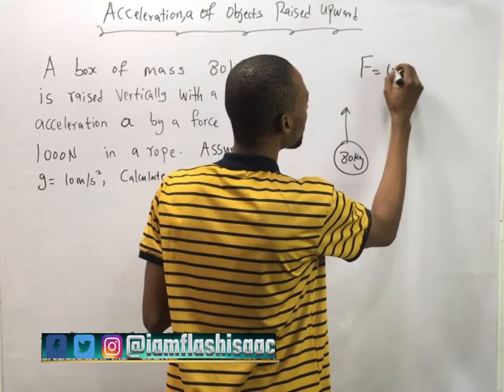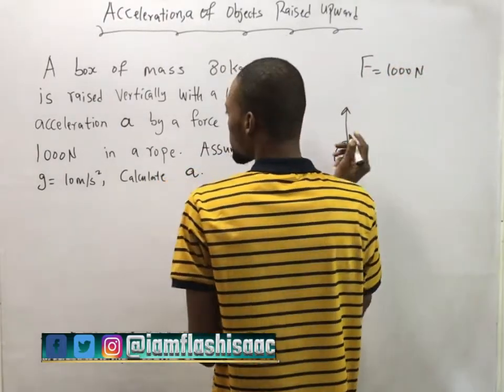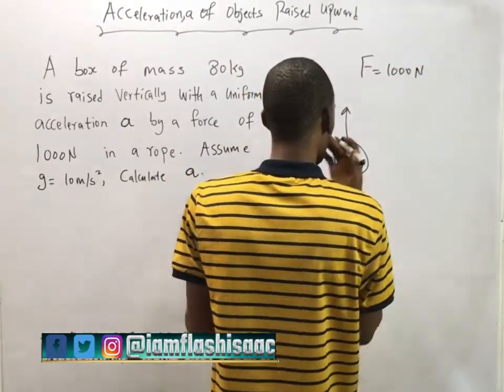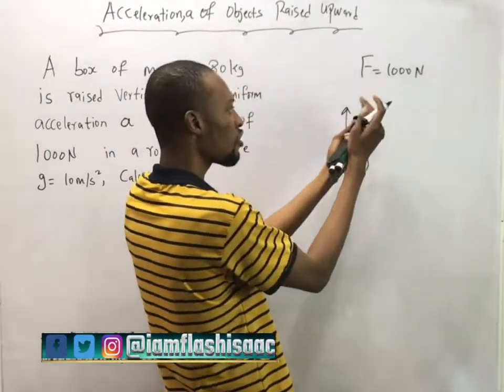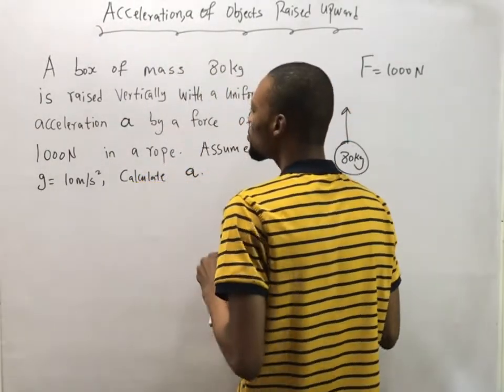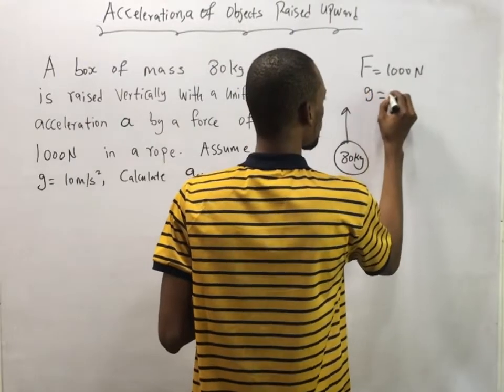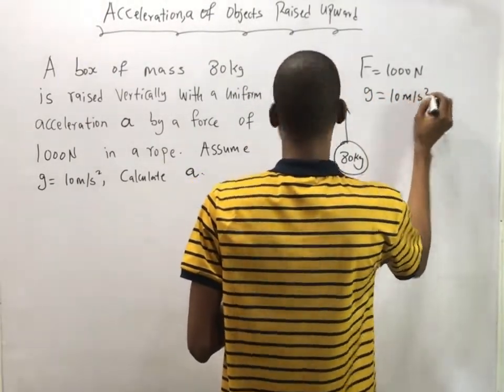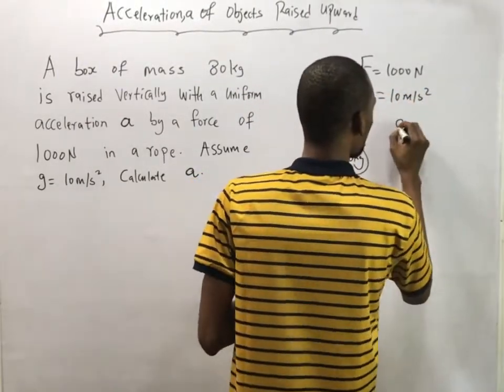So force equals 1000 Newton in a rope. It's raised in a rope with a force of 1000 Newton. Assume g equals 10 meter per second squared. Calculate a.